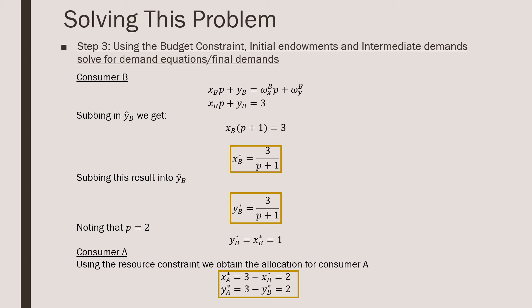Noting the fact that we discovered what price was, that being equal to two, we go and we find that our demands or the allocation for consumer B is going to be equal to one of each of these goods.